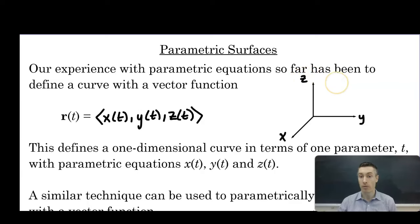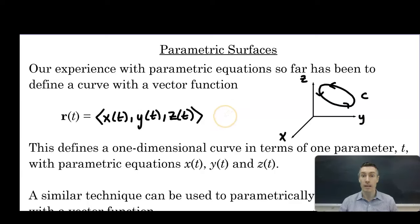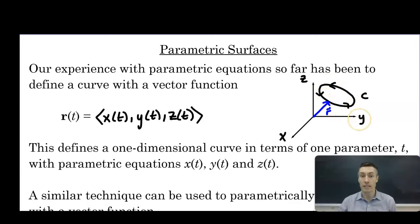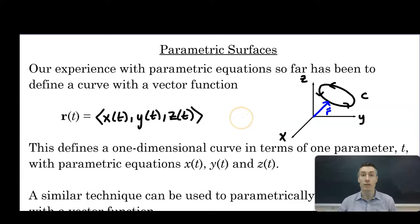Let's sketch one example in three-space. We'll draw a simple closed curve c. Remember, these curves have direction to them. The way the vector function defines the curve is we plug in values of t, we output vectors, we draw those vectors from the origin out to the curve. The terminal point of the vector is the point on the curve. This defines a one-dimensional curve in terms of one parameter t. A curve is a one-dimensional object, even if we're drawing it in two-space or three-space, since it's defined in terms of only one variable.